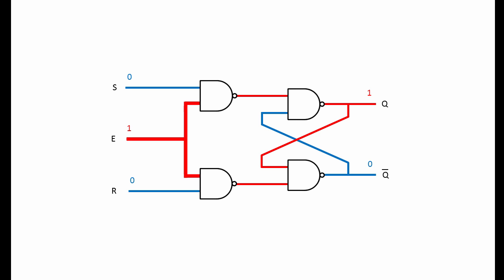The gated SR latch has a third input, E, which, when high, enables the latch. The latch is said to be transparent when it's enabled.